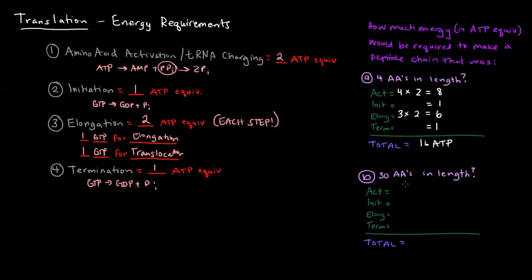So what about for a peptide chain with 30 amino acids in length? Well, in this case, you would have to have 30 times two for activation. Each amino acid would need to be activated, so that would be 60 ATP there. Initiation only would cost one ATP. Termination would also only cost one ATP.